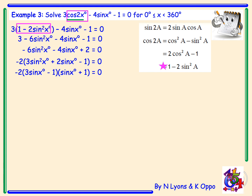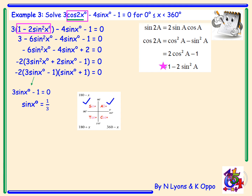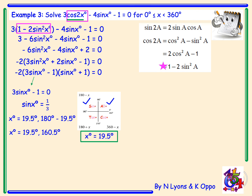Equating each bracket to zero: 3sinx - 1 = 0 rearranges to sinx = 1/3. Using the CAST diagram, sine is positive in the first and second quadrants. This is not an exact value, so using a calculator, sin⁻¹(1/3) = 19.5°. The second quadrant angle is 180 - 19.5 = 160.5°.